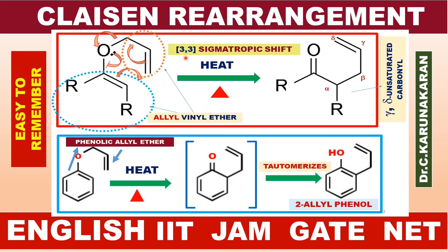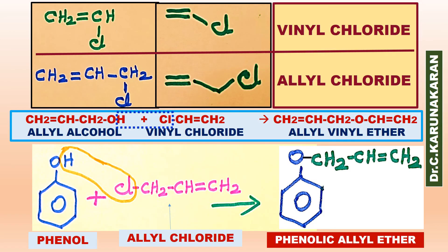That is, it involves a 3,3-sigmatropic shift. We have seen that allyl vinyl ether and phenolic allyl ether both undergo Claisen rearrangement reaction.